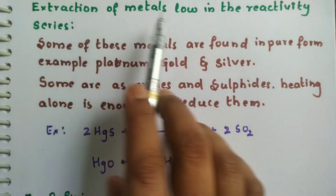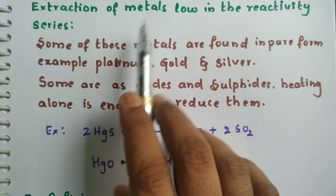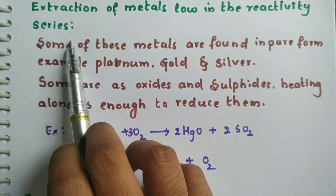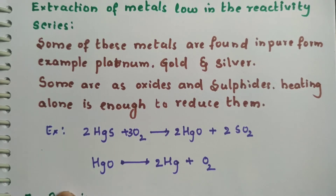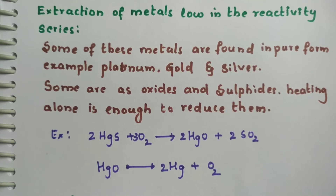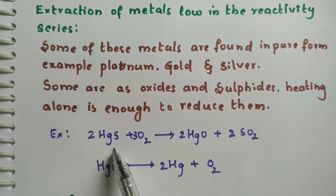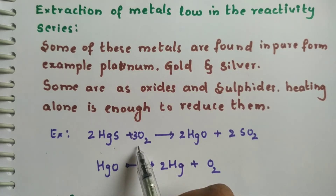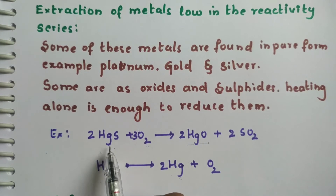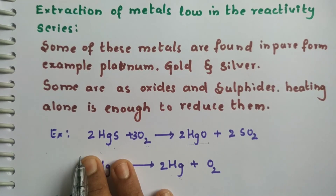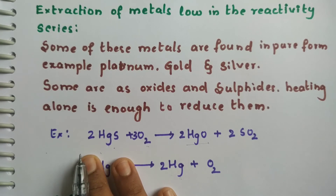Least reactive metals — those lowest in the reactivity series — are usually found in their free state because they are not very reactive. However, some are found as sulfides; for example, mercury sulfide. When heated with excess air, we get mercury oxide, which is then heated again to get mercury in the free state. Metals like platinum, silver, and gold are mostly found in their free state — we just need to concentrate and remove impurities.